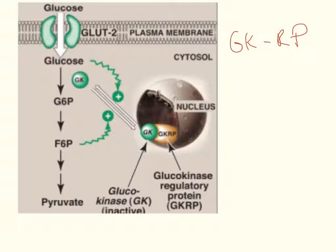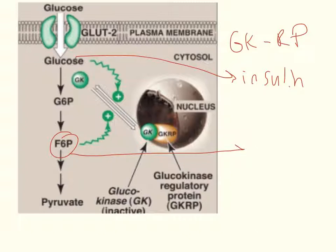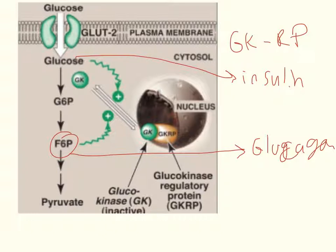Whenever glucose is high, it will inhibit the regulatory protein and glucokinase will be brought out of the nucleus, so glycolysis is favored. High glucose is insulin-controlled, while fructose 6-phosphate levels are glucagon-controlled. These are hormonally controlled pathways that alter the expression of glucokinase. Note that glucose 6-phosphatase — which converts glucose 6-phosphate back to glucose — is not being altered in this mechanism; we're only up- or down-regulating glucokinase.